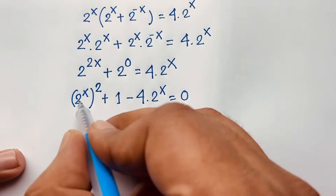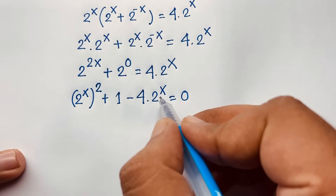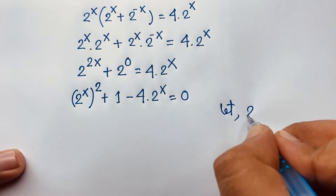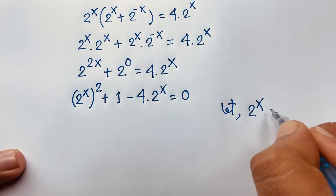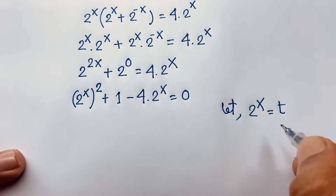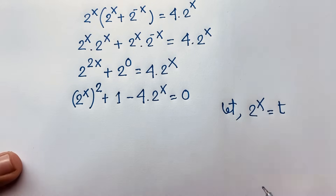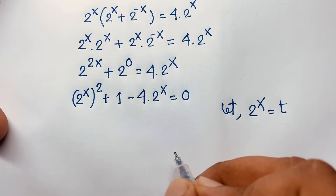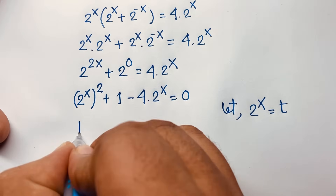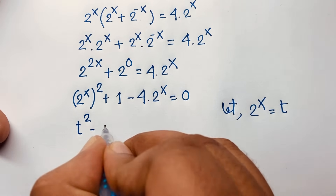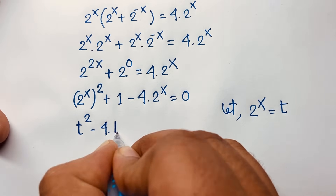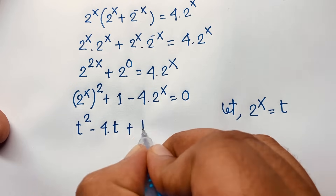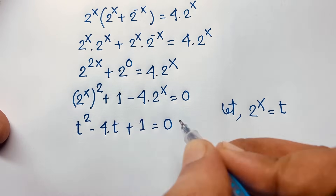Now, here, 2 to the power x appears twice and both are the same. So let 2 to the power x equal t. We are finding out the value of t in this quadratic equation. So it will be t squared minus 4t plus 1 is equal to 0.